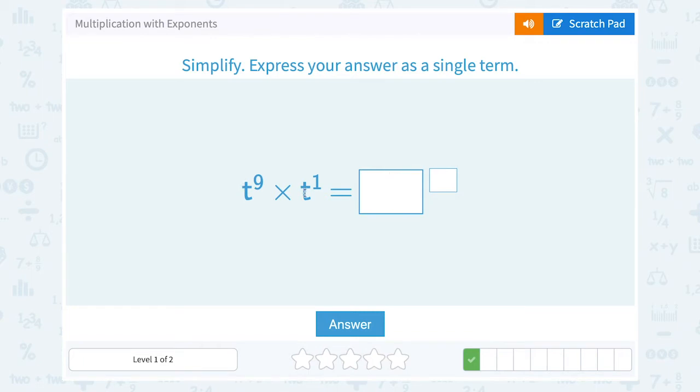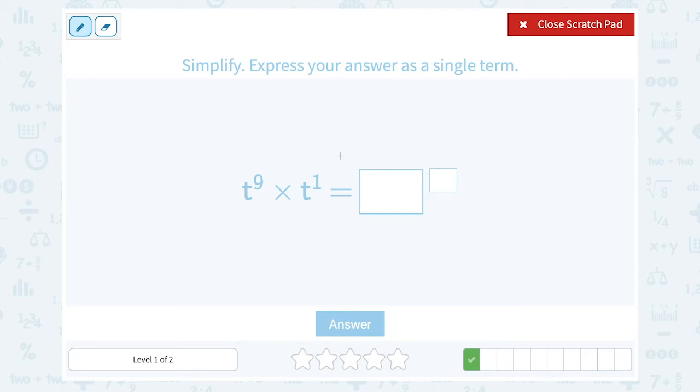t to the 9th times t to the 1st. Much like the last problem, if I were to multiply this out the long way, I would have 9 t's multiplied out and then one more t multiplied out. So altogether, I would have 9 plus 1 or 10 t's multiplied out. So we can call this t to the 10th power.